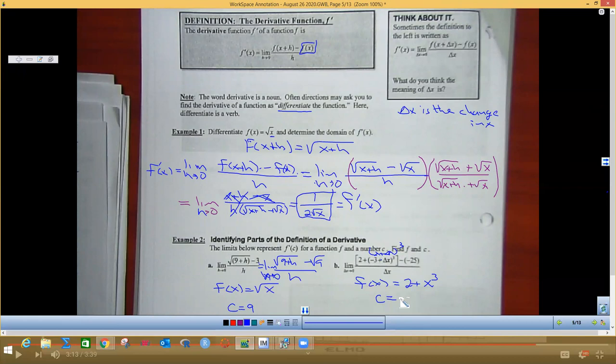So if I think about that over here, if I took 2 plus negative 3 cubed for this negative, that right there is going to be that negative 25 part that goes right there. So this stuff takes some practice.